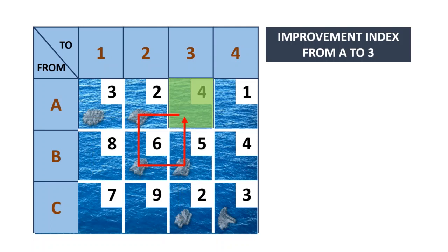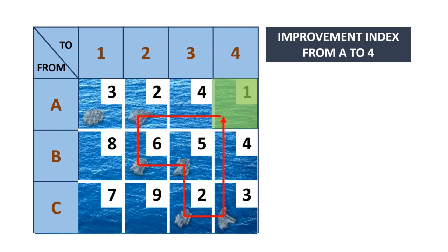For route A to 3, starting with plus on 4, then minus, plus on 6, and minus, the improvement index is plus 3. Again, it is an expensive route to use.